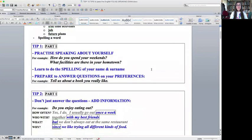So tip number one is practice speaking about yourself. For example, think about a question such as how do you spend your weekends and practice talking about it, or what facilities are there in your hometown. You can do that very easily even driving your car or whilst you're cooking or whilst you're having a shower. Then practice spelling your name and your surname. It has to just come off the bat, you have to be able to do it very easily.